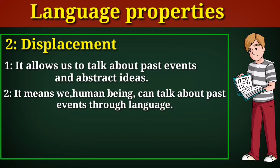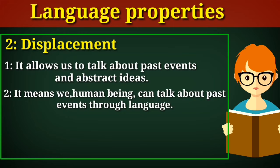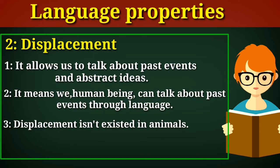In simple words, it means that it is the only characteristic of human beings that allows them to talk about abstract things and talk about past events. Simply you can say that displacement refers to the ability of human language — that we can talk about past events or we can talk about things that are abstract. We can talk about past events and animals cannot communicate about past events. So this property is called displacement.